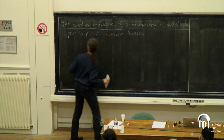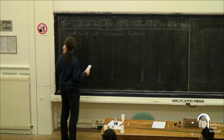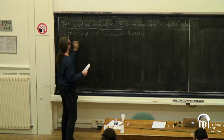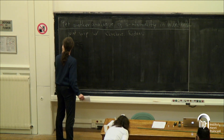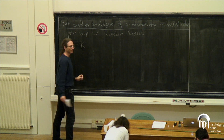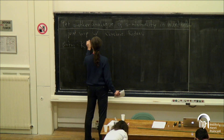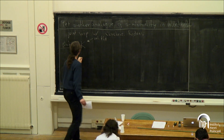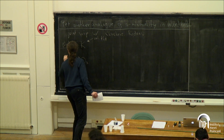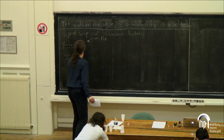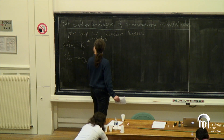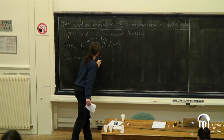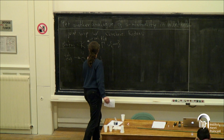Let me mention the existing ones. First, notation: k will always denote a valued field. I write O_k for the valuation ring. I denote the valuation by v and the value group by Γ, and I also have infinity. I denote by little k the residue field, and here I have the residue map.